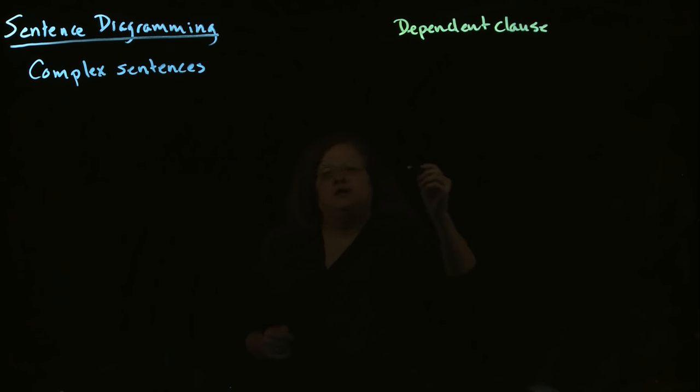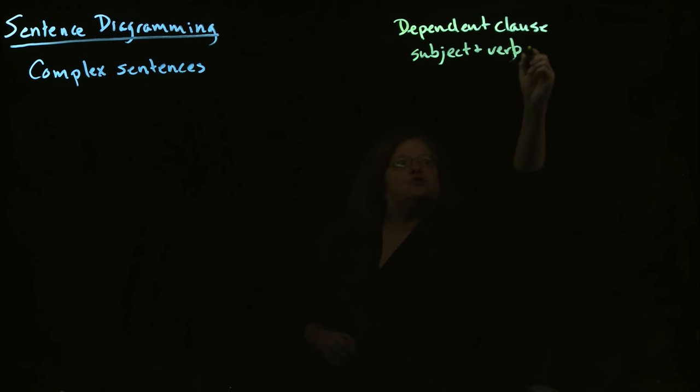And so what we're looking at is it's going to have a subject and a verb just like a sentence. But it's also going to have a dependent word or words.